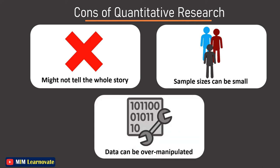Data can be over-manipulated: It is possible for the setting of a research study to be manipulated and controlled to such an extent that it affects the accuracy of the results, or for a range of other unaccounted-for variables to affect the study.